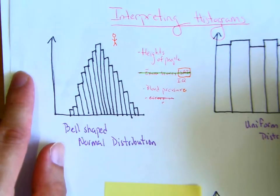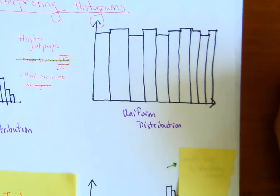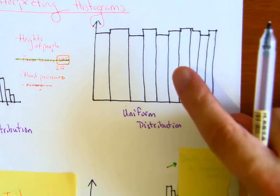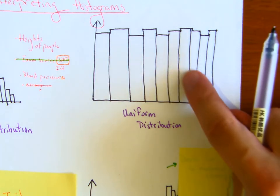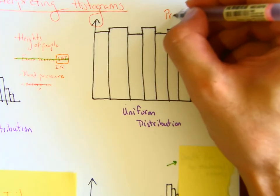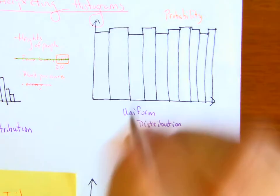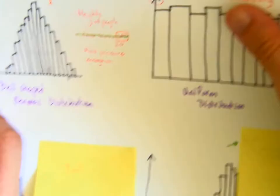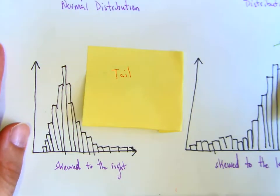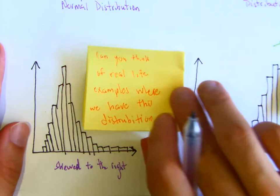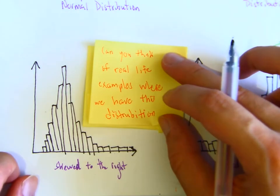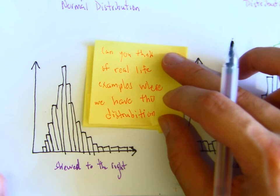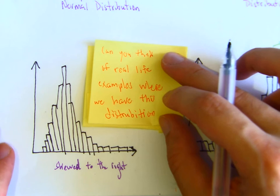For uniform distribution, can you think of a real-life example? This one is not easy — we'll come back to it when we do probability. For skewed right, pause the video and think: can you think of real-world examples where if you took all the data values, most of them would be towards the left side, giving a skew right distribution?